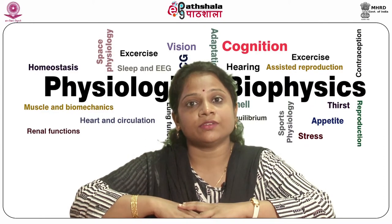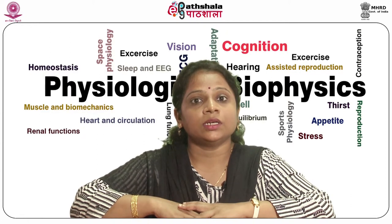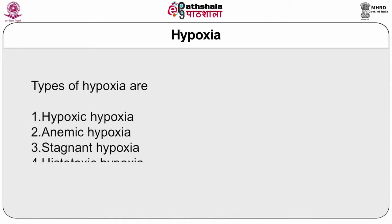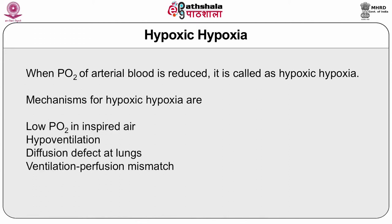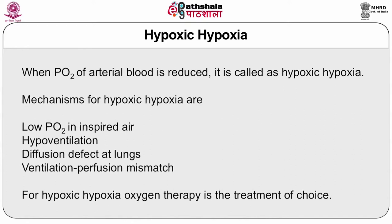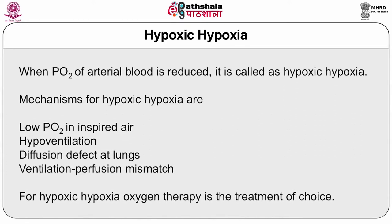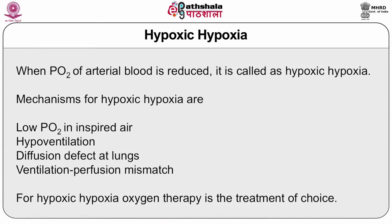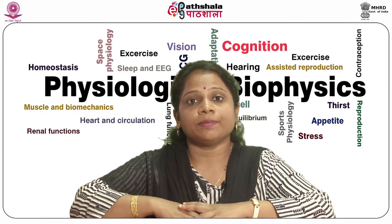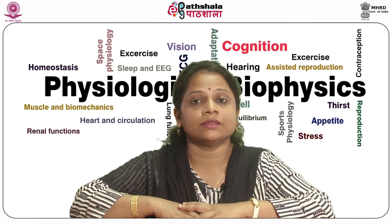Hypoxia is deficiency of oxygen at the tissue level. It could be due to inadequate supply of oxygen to the tissues or inability of tissues to utilize available oxygen. There are various types: hypoxic hypoxia, anemic hypoxia, stagnant hypoxia, and histotoxic hypoxia. In hypoxic hypoxia, the PO2 of arterial blood is reduced. Causes include low PO2 in inspired air, hypoventilation, diffusion defects, or ventilation-perfusion mismatch; a common example is difficulty breathing at high altitude. Treatment is oxygen therapy.